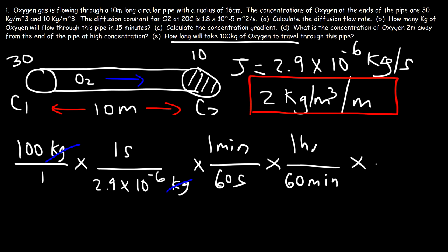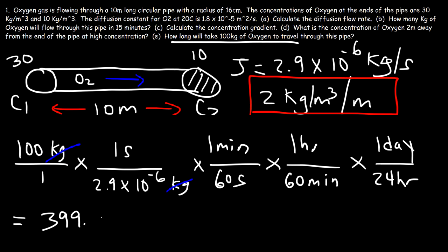Converting hours to days by dividing by 24, we get approximately 399.1 days. So it will take a very long time — nearly 400 days — for 100 kilograms of oxygen to travel through this pipe under these diffusion conditions.